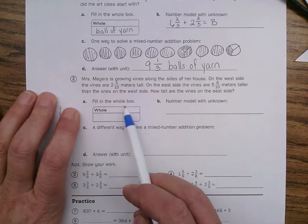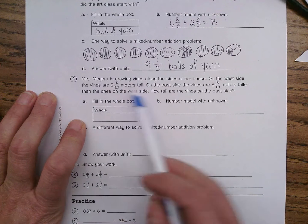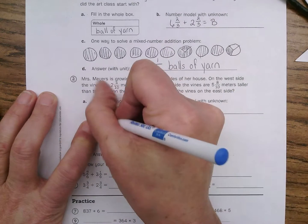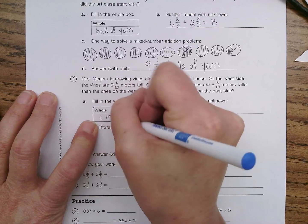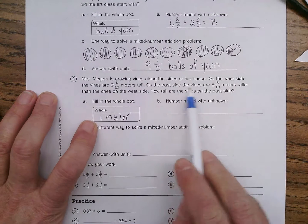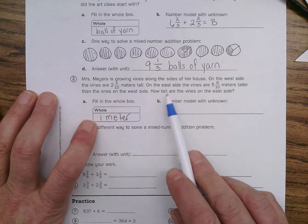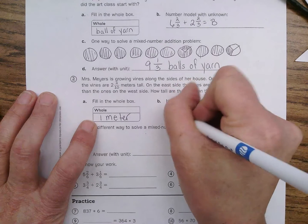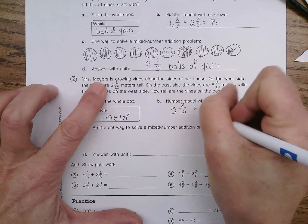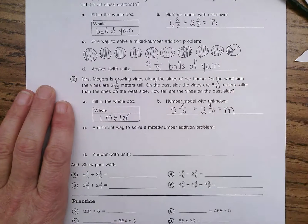Okay, so let's fill in the whole box first. A whole, what are we counting? Two and four-tenths meters, five and eight-tenths meters. So, we're counting meters. So, a whole is going to be one meter. So, if the ones on the east side are five and eight-tenths meters taller than the ones on the west side, then we have to add five and eight-tenths plus two and four-tenths to equal, let's have it equal m. m for meters, right?